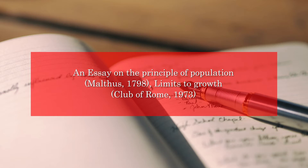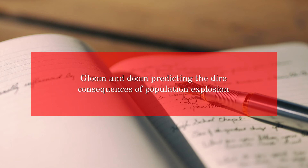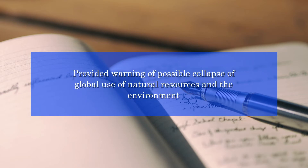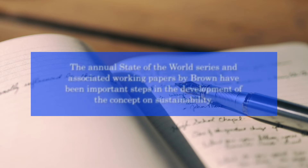A number of publications discussed the possible impact of environmental degradation and the need for sustainable development. Key publications include An Essay on the Principle of Population by Malthus in 1798, Limits to Growth published by the Club of Rome in 1972, and a publication by the World Watch Institute in 1974 by Lester Brown. These works warned about the dire consequences of population explosion on global resources, and Brown's annual State of the World series became important steps in developing the concept of sustainability.